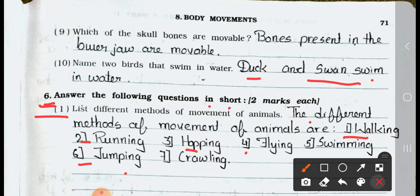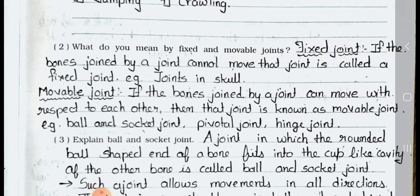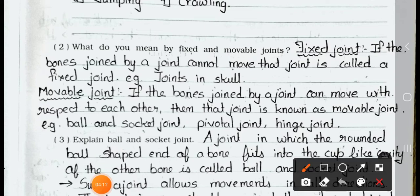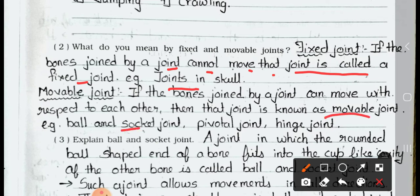Question 2: What do you mean by fixed and movable joints? Answer — Fixed joint: If the bones joined by a joint cannot move, that joint is called a fixed joint. Example: joints in the skull. Movable joint: If the bones joined by a joint can move with respect to each other, then that joint is known as a movable joint. Examples: ball and socket joint, pivotal joint, and hinge joint.